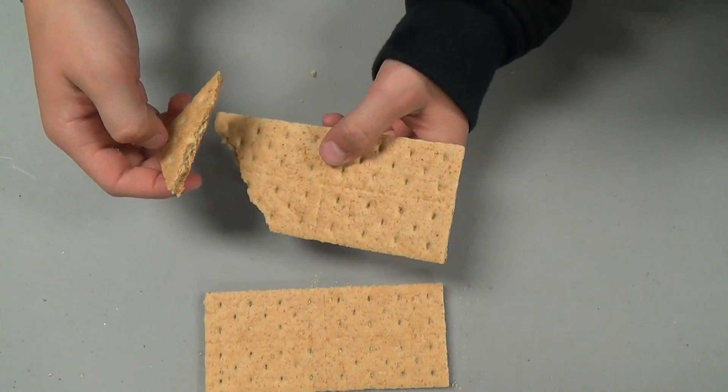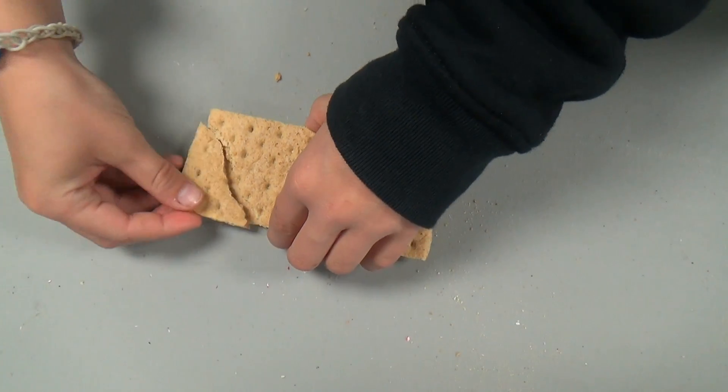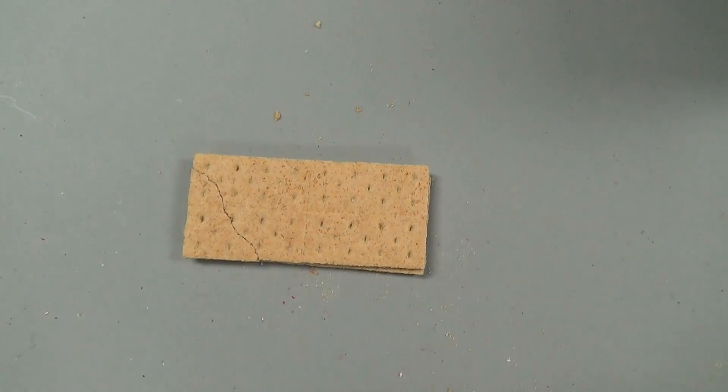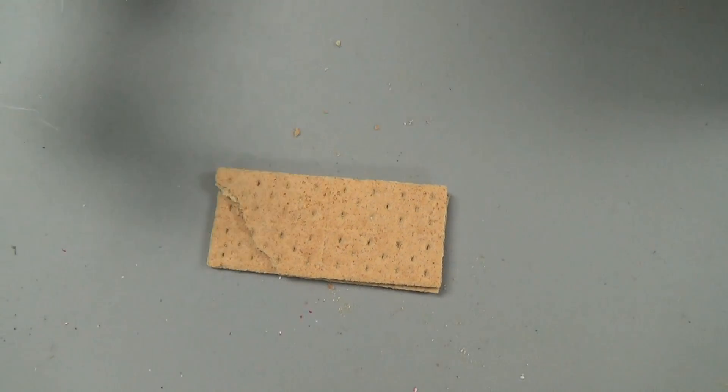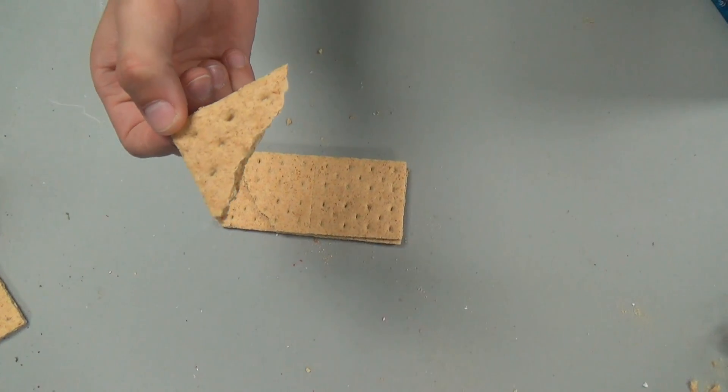I could break the graham cracker into two fractions that are different in size, and give you one that is not equal in size, but that would not be a fair way to share. These two parts of the graham cracker are not equal in size, but each is a fraction of the whole graham cracker.